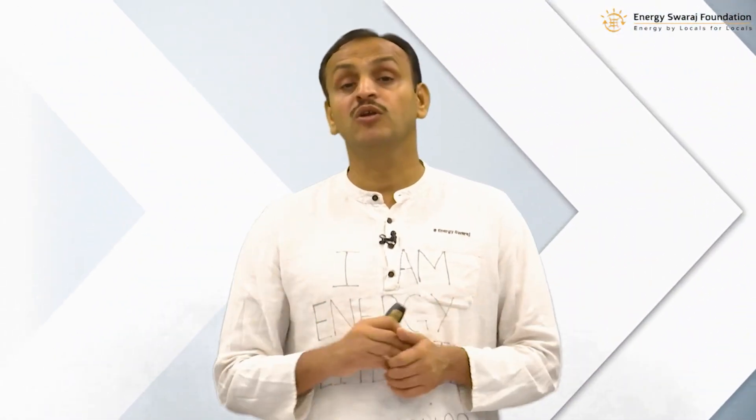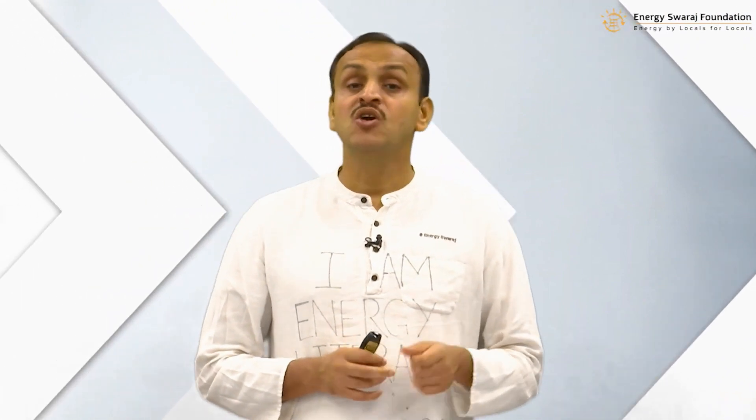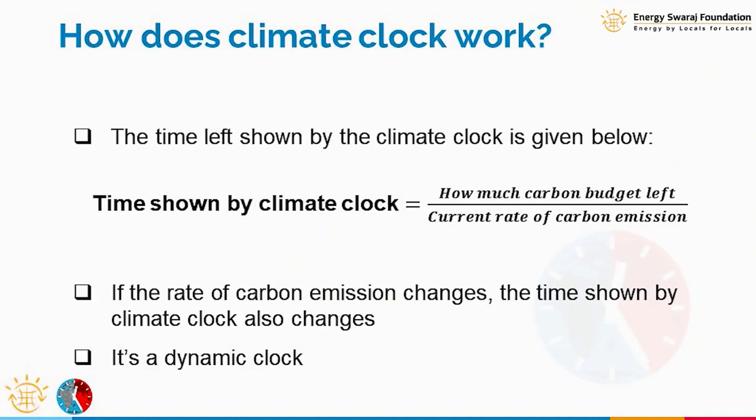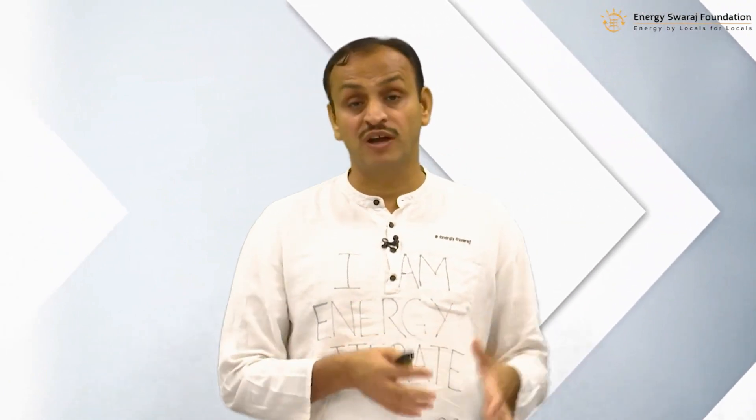There is a linear co-relationship. So the two parameters are: one, what is the carbon budget left today — how much more carbon dioxide we can emit — that is what is called the carbon budget. Second, at what rate we are emitting carbon dioxide, which depends on how much coal, oil, and gas we are burning.